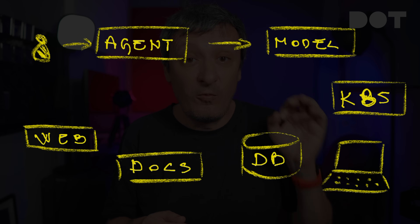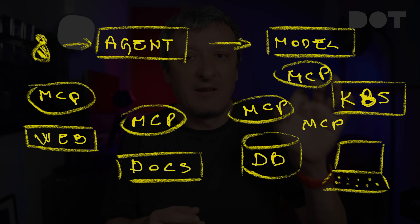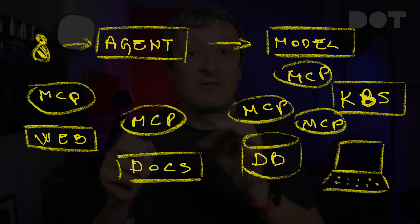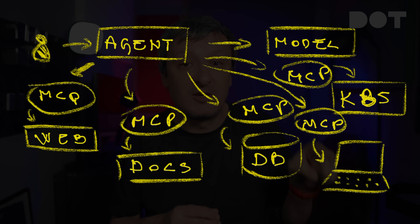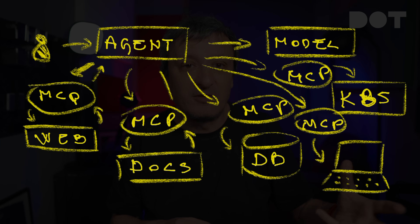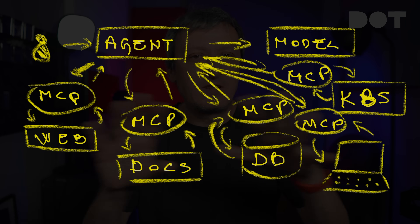One such attempt at defining a standard protocol for AI is model context protocol or MCP. AI does not have to know the specifics of how to search the web, how to access documentation of a specific project, how to store and retrieve its memory from a database, or how to interact with Kubernetes clusters. All we need is to put MCP servers in front of those and tell agents where to find them. From there on, those agents can use the MCP protocol to talk to those servers, which in turn will respond with what they know. All that might sound confusing, so let's take a look at two MCP servers I believe are the most important for software engineers.